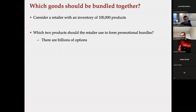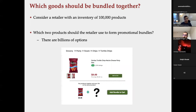There are actually billions of options — it's combinatorially complex. There are 100,000 choose two options. Even if I make this question slightly easier and pick one product, say Doritos chips, there are still 99,999 options to choose from for making a bundle.